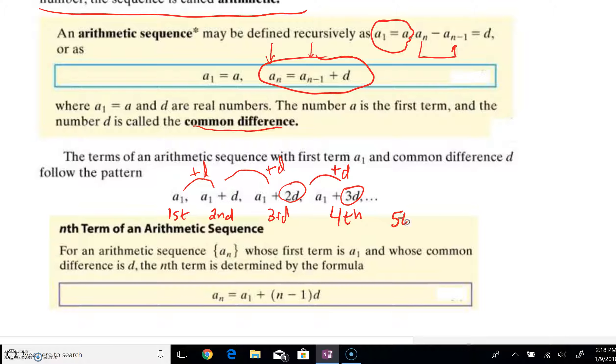You might guess what that fifth term would be. The fifth term is you add a d, you'd have a sub 1 plus 4d. Hopefully, you can see the pattern that we're talking about. As we're in the fifth term, we are adding four common differences. Obviously, we didn't add a common difference the first time for our first term, but we add one for each successive.